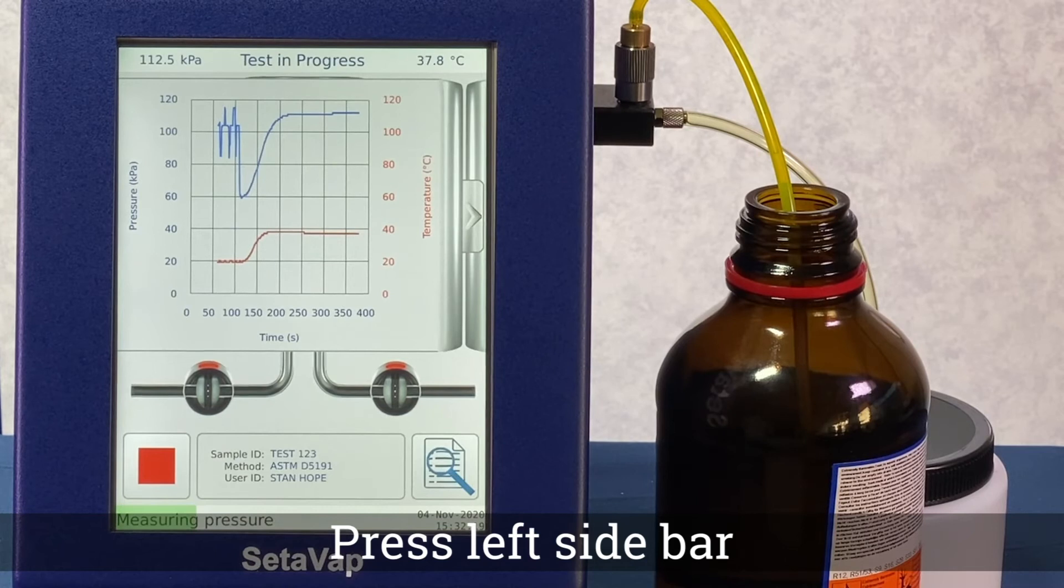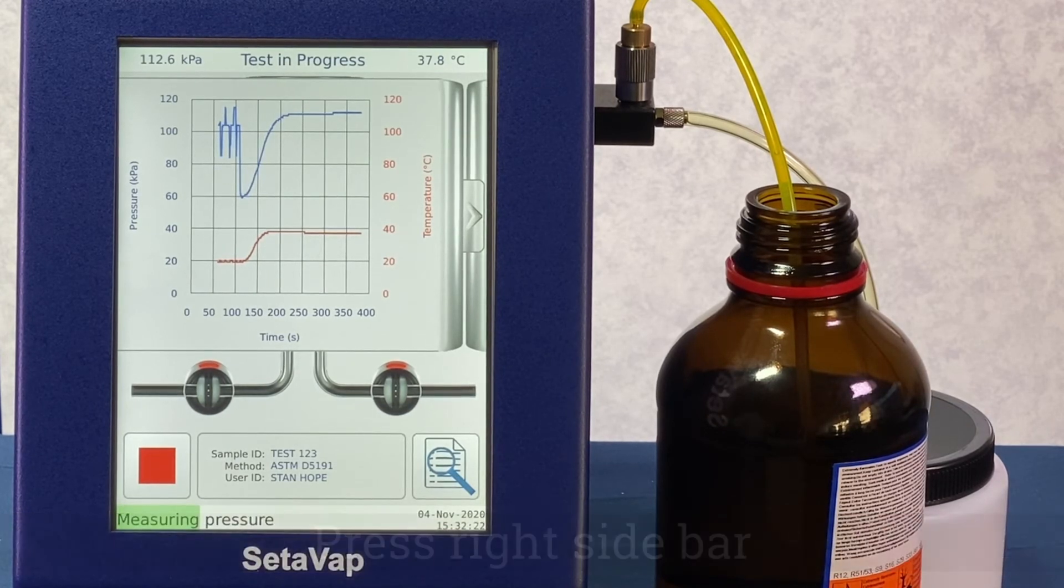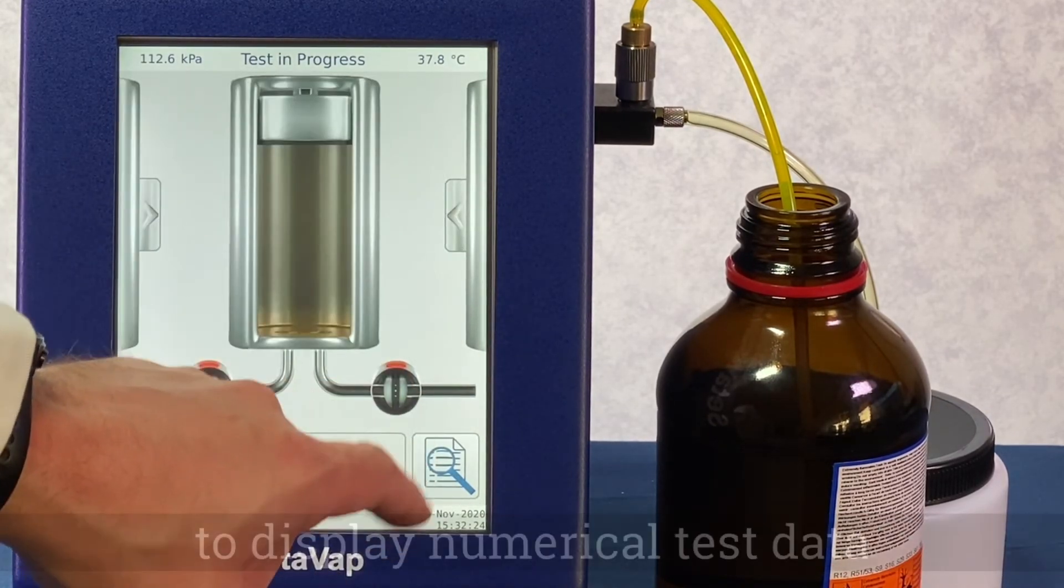During the test, pressing the left sidebar on the screen will display graphical test data and the right sidebar will display numerical test data.